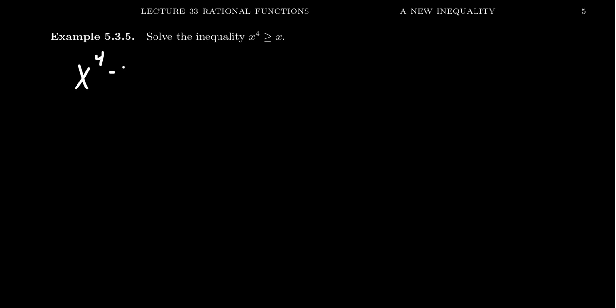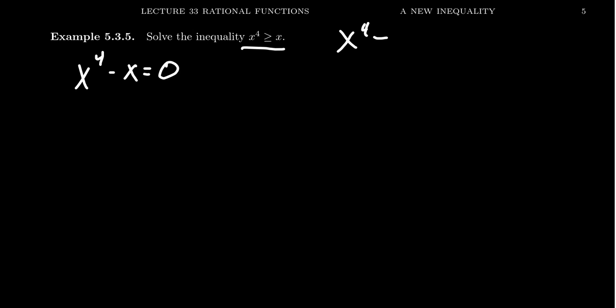Let's take a look at a different example this time: x⁴ ≥ x. As this is a polynomial inequality, my recommendation is to first set one side equal to zero. So if you subtract x from both sides, you get x⁴ − x ≥ 0. This is critical because we want some comparison to zero with our inequality whenever possible, because that tells you whether we want to be above or on the x-axis.